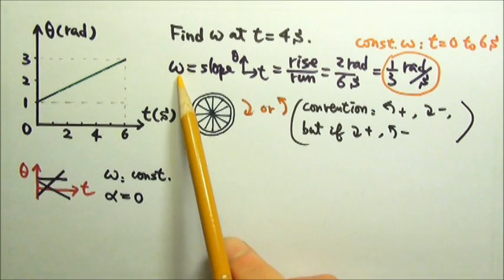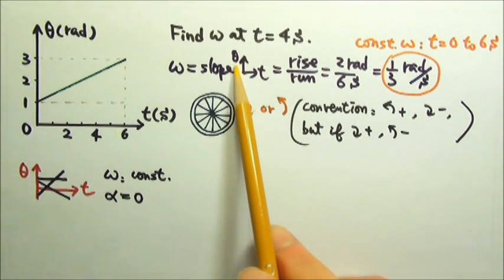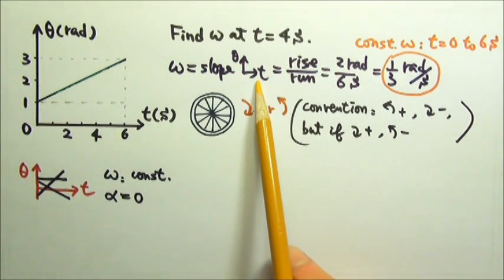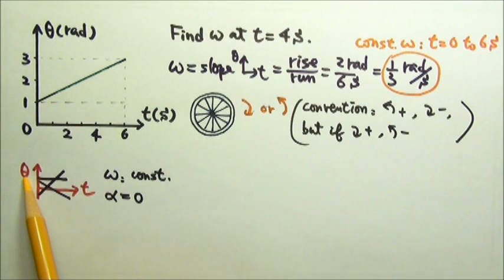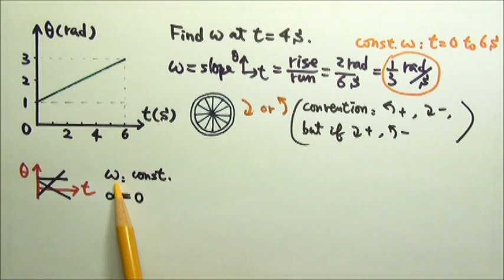And because the angular velocity is the slope of the angular position as a function of time graph, that means if our graph is any of these straight lines, then the slope, the angular velocity is a constant, which means the angular acceleration will be 0.